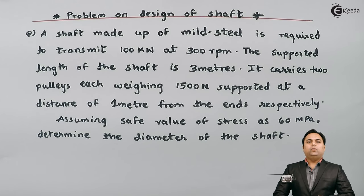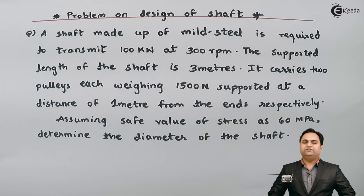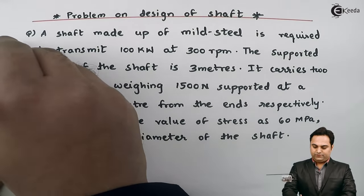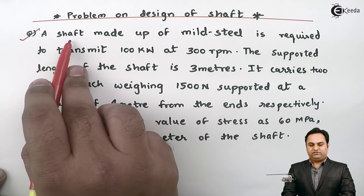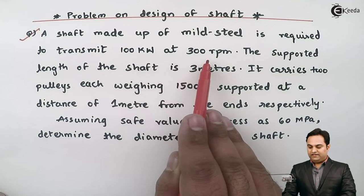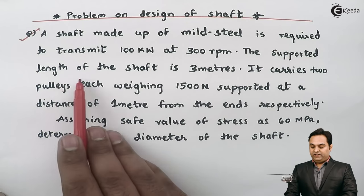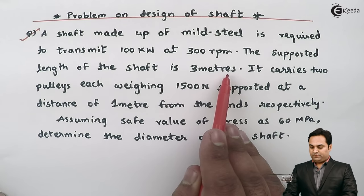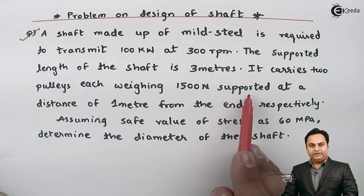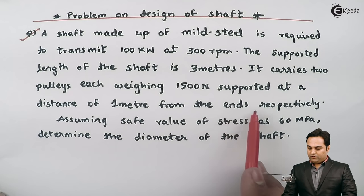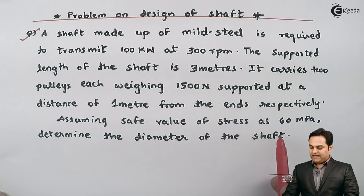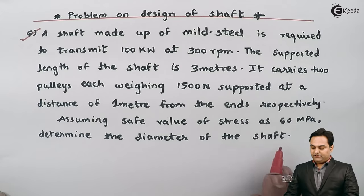Hello friends. In this video we will see a problem on the design of a shaft. A shaft made up of mild steel is required to transmit 100 kilowatts at 300 rpm. The supported length of the shaft is 3 meters. It carries 2 pulleys each weighing 1500 Newton, supported at a distance of 1 meter from the ends respectively. Assuming a safe value of stress as 60 MPa, determine the diameter of the shaft.